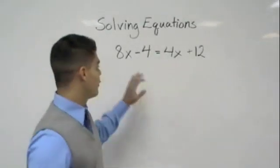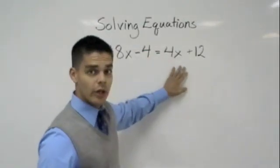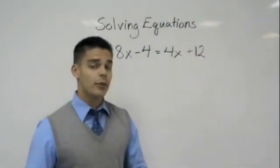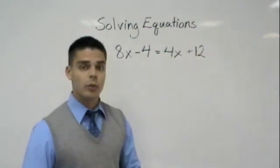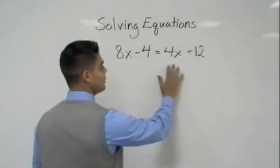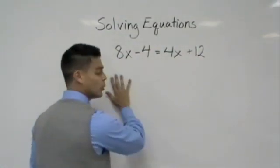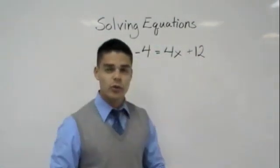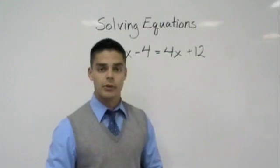When we're solving equations with variables on both sides of the equation, it doesn't matter which one we take over to either side, but we always try to make things easy for us by taking the smaller one over to the other side. We do that so we can shy away from negative numbers.